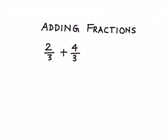In case of like fractions, all you need to do is just copy the denominator, which is 3 in this case, and add the numerators. So we'll add 2 and 4, so the answer is 6 by 3.